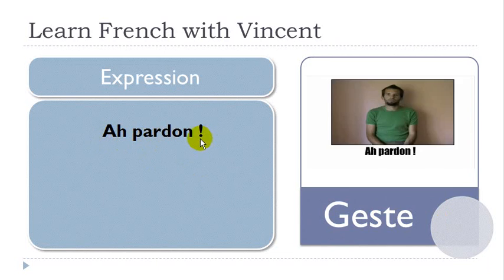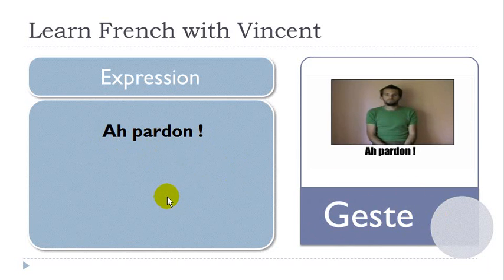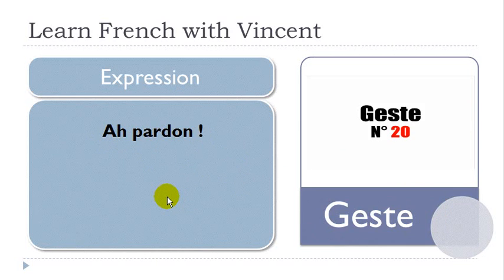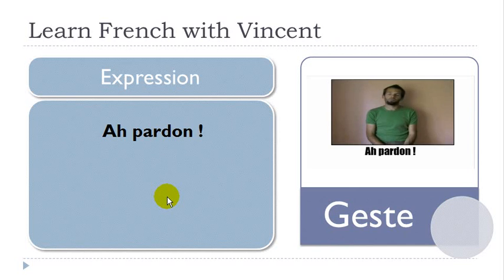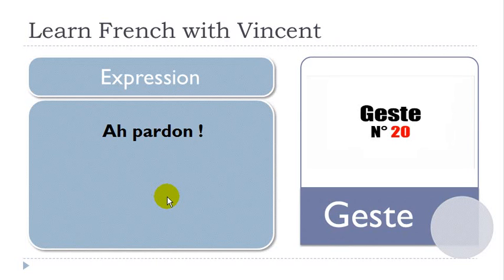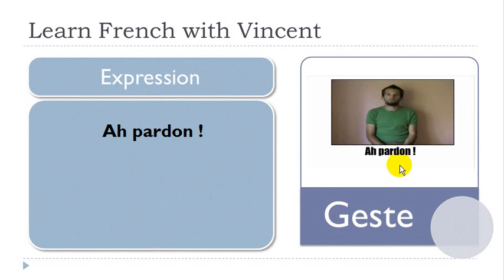APROPOS leads us to the next one. You are discussing with someone and you want to say 'ah pardon.' You probably want to add something, but you're not going in the same direction as the person you are talking to. You want to say 'ah pardon.' Look — the finger like that.